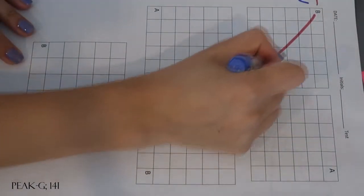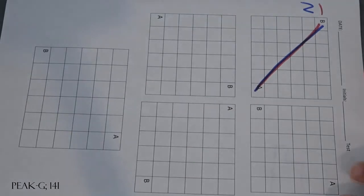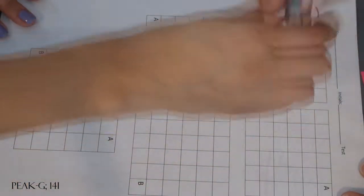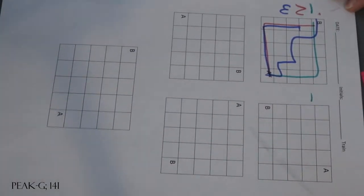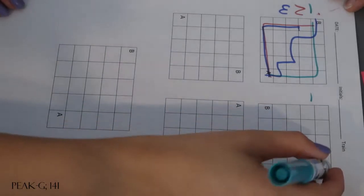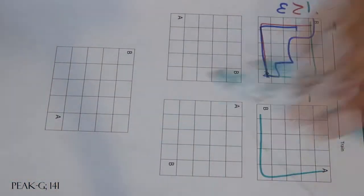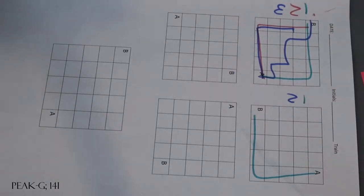Make another path from A to B. Make another path from A to B. Let's do another one. All right, make a path from A to B. Awesome! Make a new path from A to B.